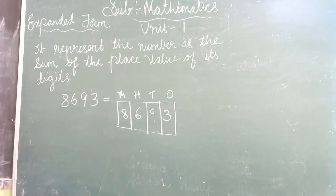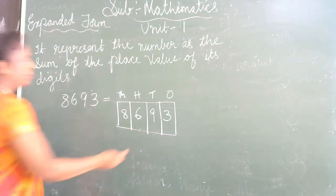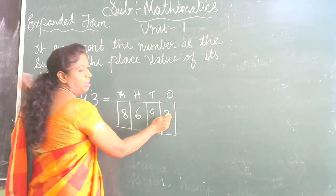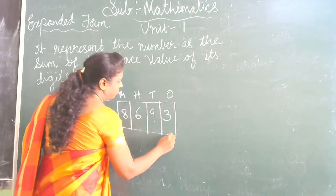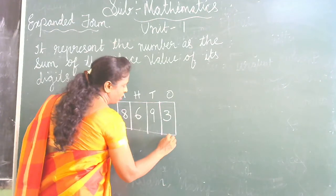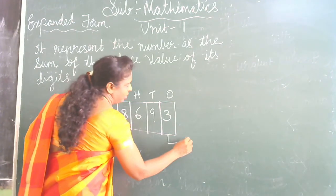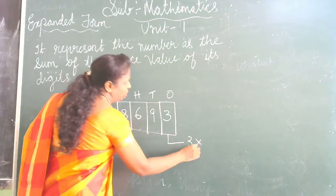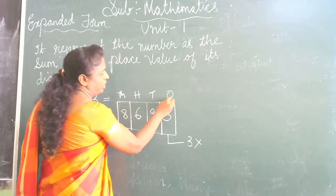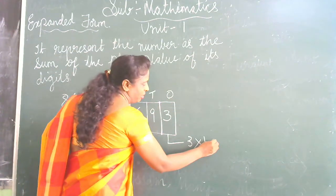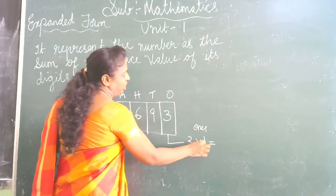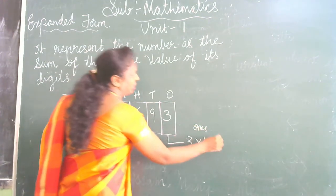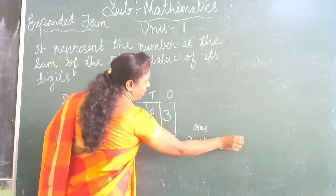Now, the place value of 3: 3 times 1 is 3 — we can write 3 ones, which equals 3.